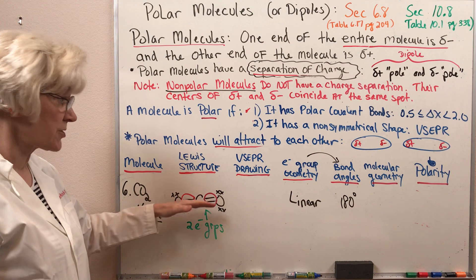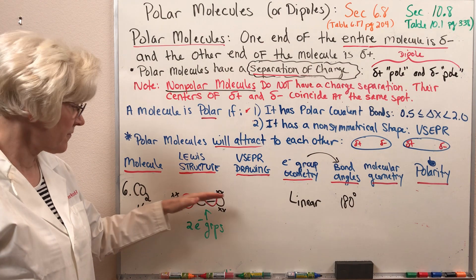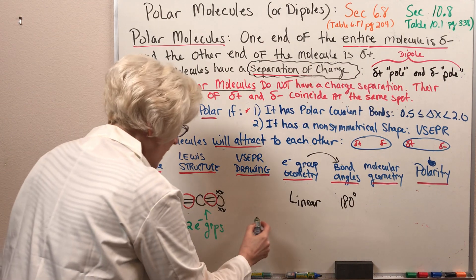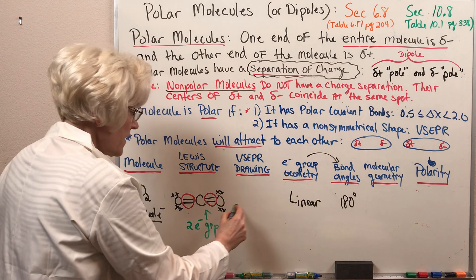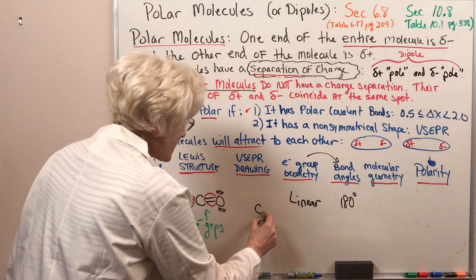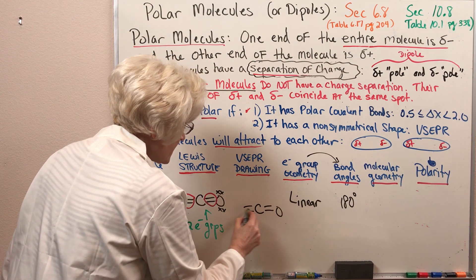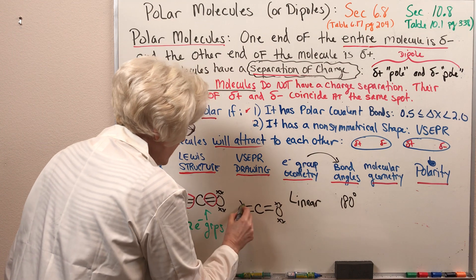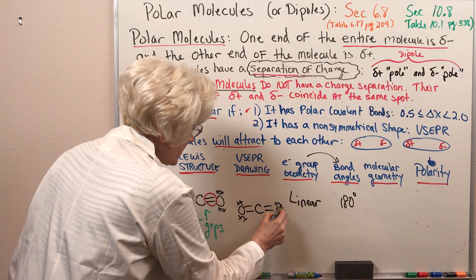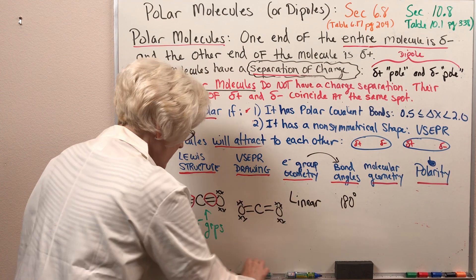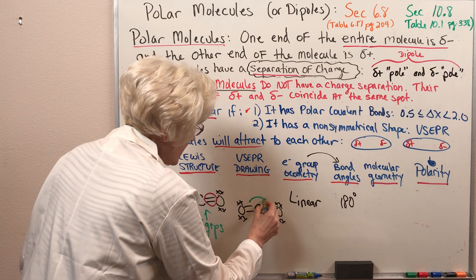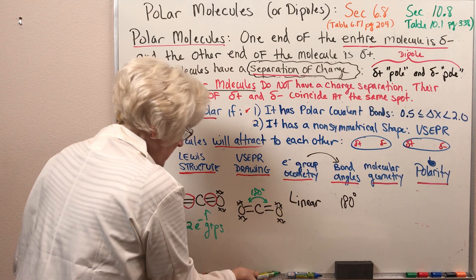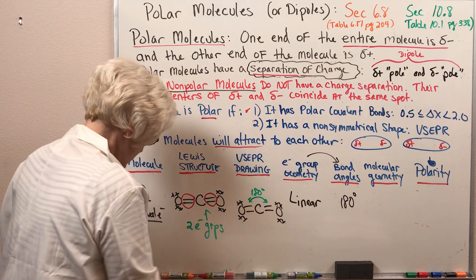What do those two electron groups do to maximize their distance apart? We see in the tables that those electron groups will repel 180 degrees apart and assume a linear electron group geometry with bond angles of 180 degrees. So our Lewis structure is in fact a good representation of the actual shape — carbon dioxide is a linear molecule with bond angles of 180 degrees.